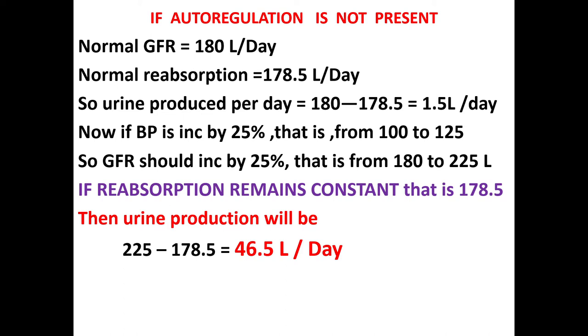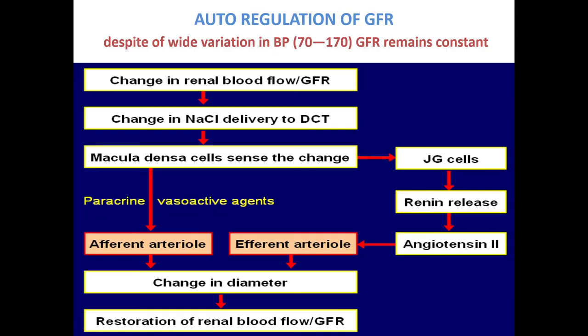Auto-regulation means this is the intrinsic property of the glomerulus to maintain GFR within normal limits. The proper definition: despite wide variation in mean arterial pressure from 70 to 170 mmHg (some books say 80 to 180), your GFR remains constant. This is auto-regulation of GFR. Even if you cut down the nerve supply to the kidney, this property is maintained — hence it is an intrinsic property.